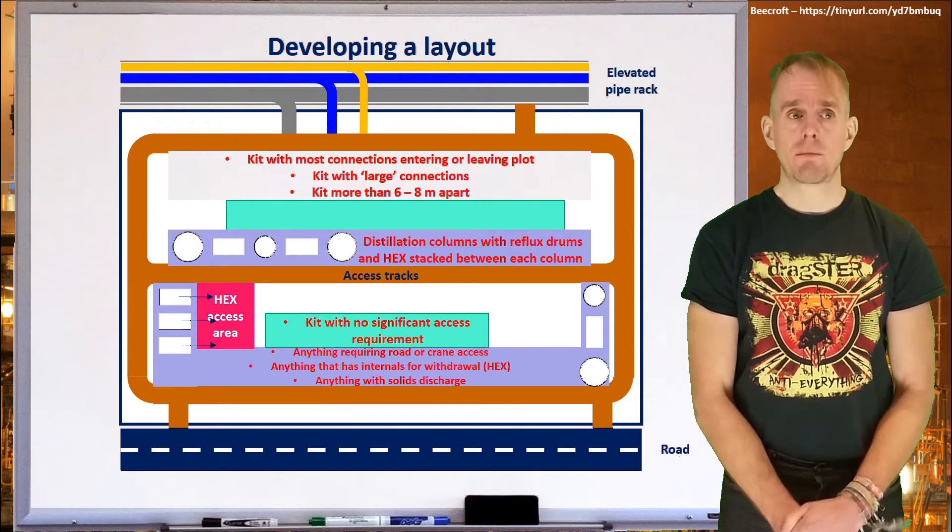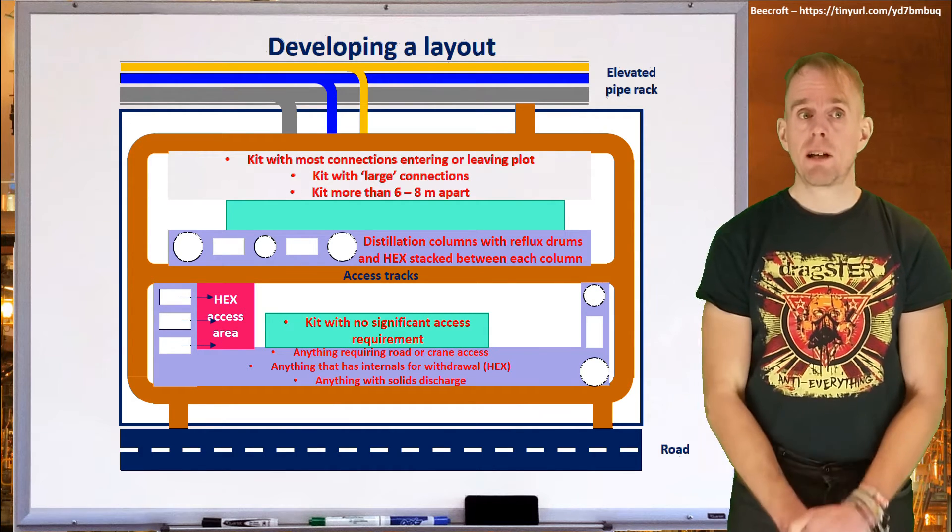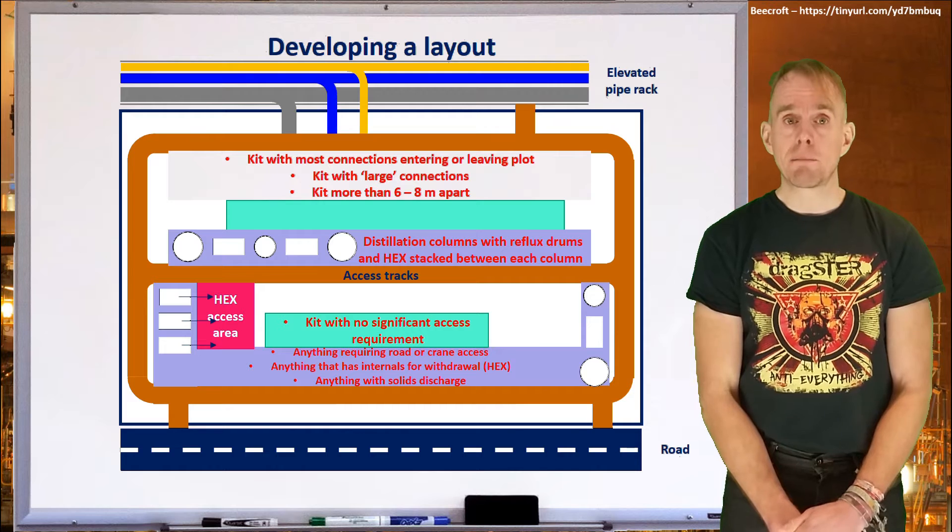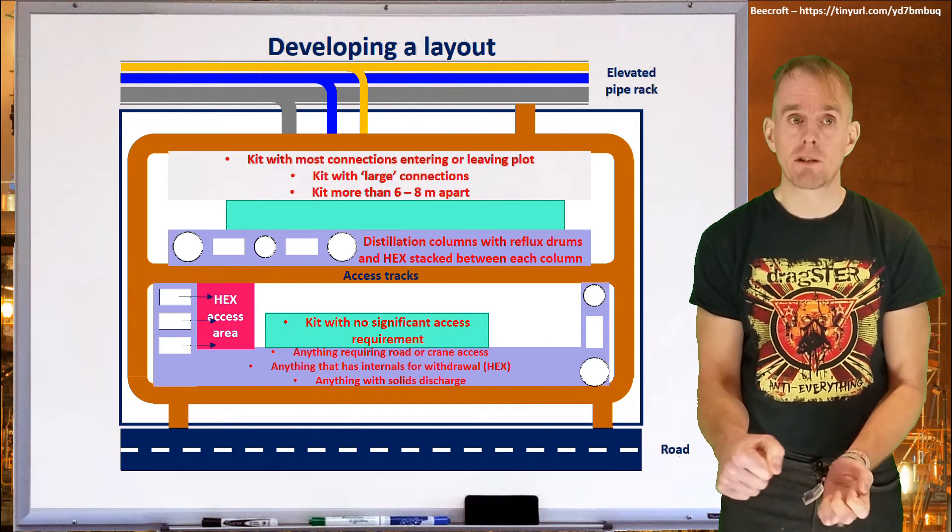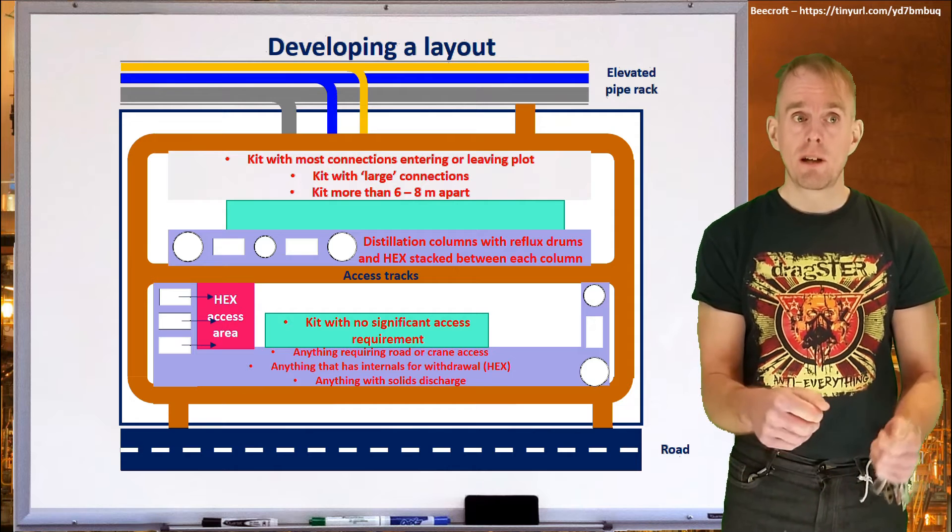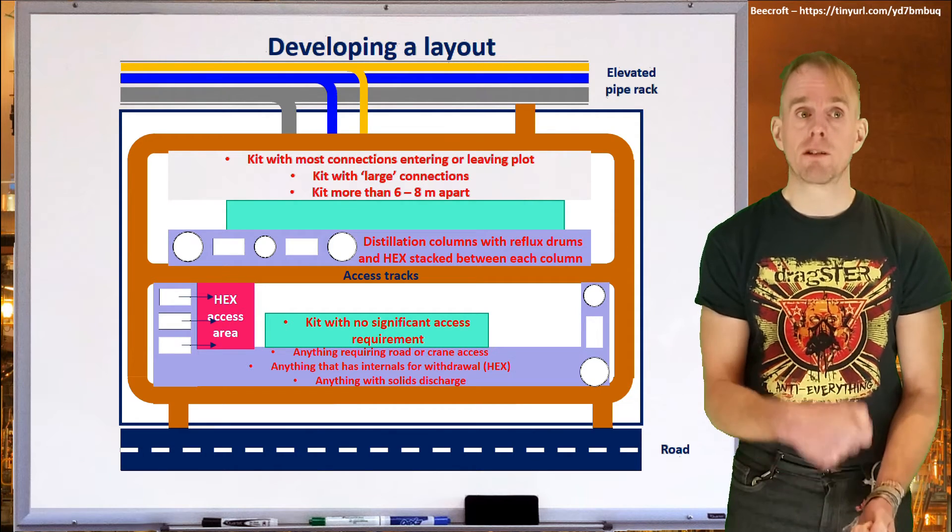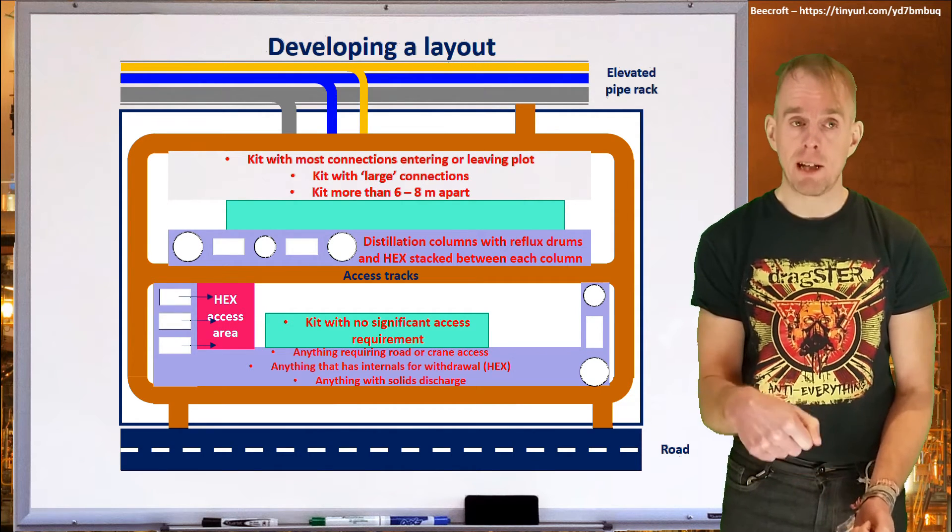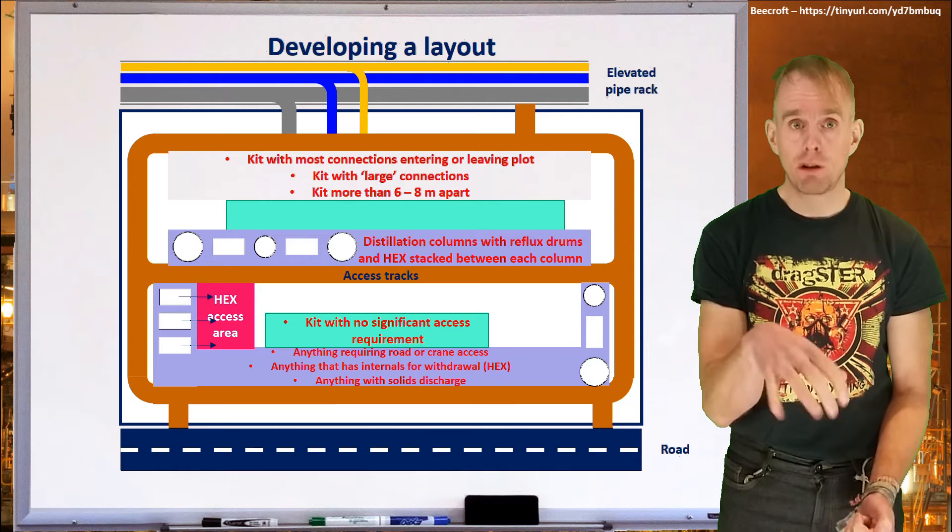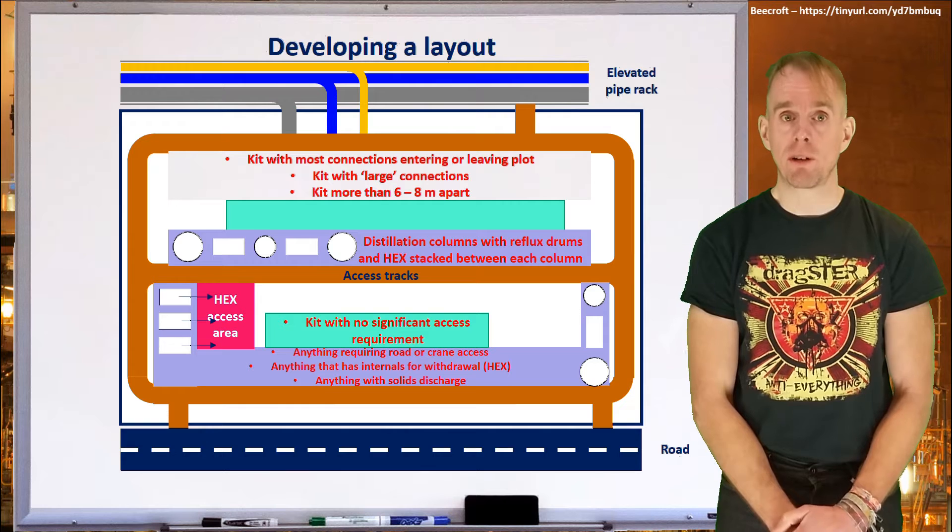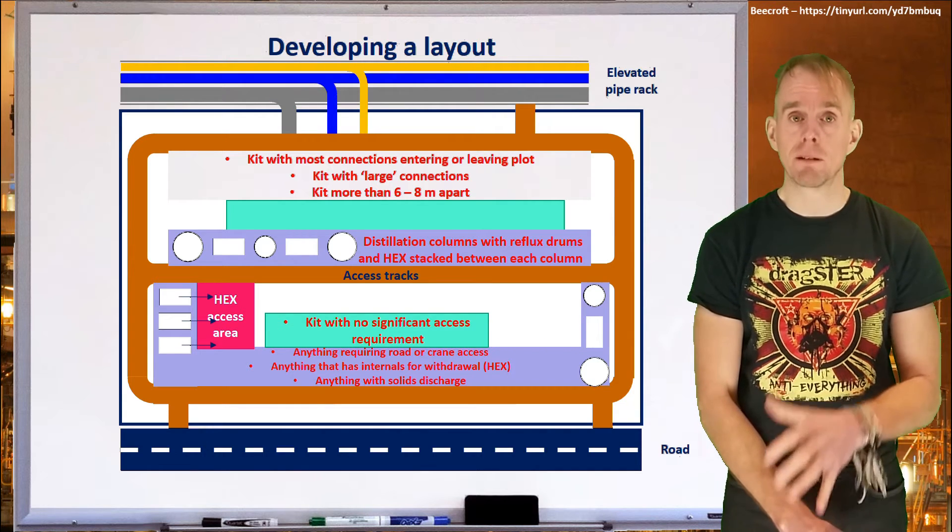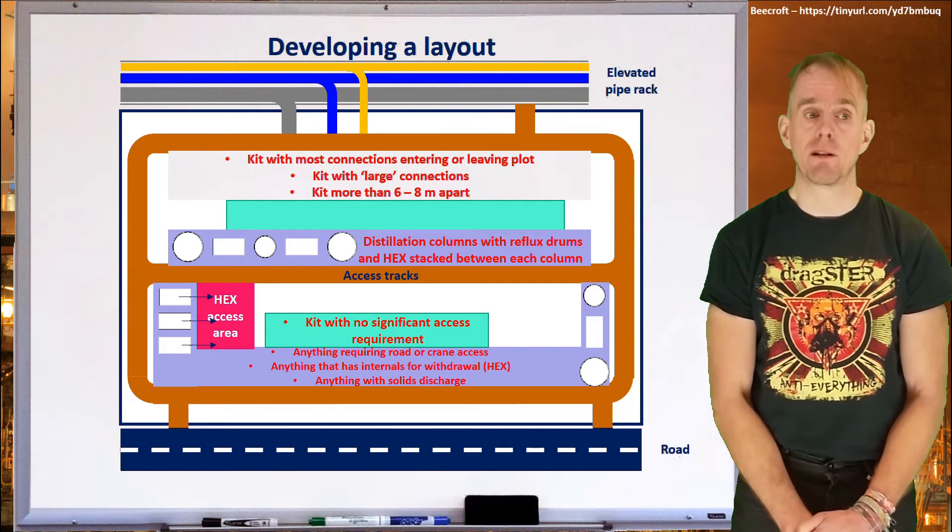Again, remember maintenance. I've put some rectangles here that are meant to be heat exchangers, and that big purple area next to them is an access area where you can pull out the tube bundles. It's close to a road, so you can either jet wash the tube bundles in place by getting the jet wash equipment in, or you can lift those tube bundles onto low loaders or other forms of transport on the access track and get those tube bundles out to somewhere else to be cleaned off.